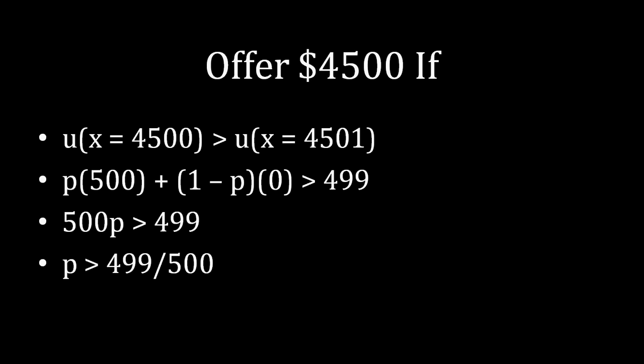So that means our ultimate calculation boils down to figuring out whether Albert wants to get the safety of the guaranteed acceptance from Barbara if he offers $4,501, or if he's willing to risk that gamble between Barbara accepting sometimes and rejecting sometimes when he offers $4,500. And so the second bullet point actually maps out how much those payoffs are. And if we solve for p, we're just doing a little bit of algebra here. We see that if p is greater than $499 over $500, Albert will offer $4,500.